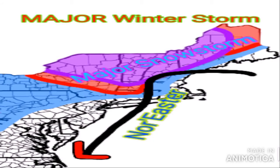Hello everyone, welcome back to Fancy Weather Channel. For today's video we're going to be talking about a major winter storm — a major snowstorm — expected for portions of the interior northeast. This is expected to be a nor'easter that will move onto Long Island, then through New Hampshire, before moving off the coast of Maine, causing some pretty major snowstorm accumulations for portions of the interior northeast and New England.